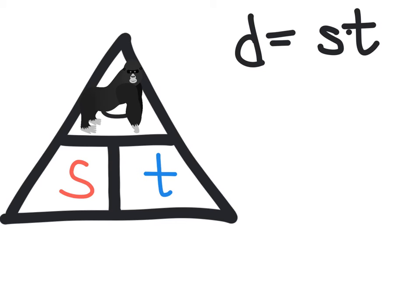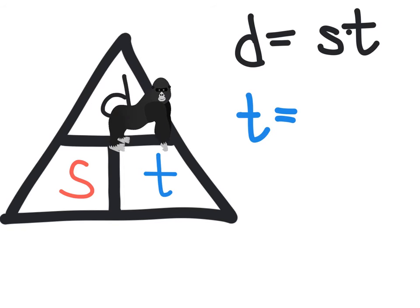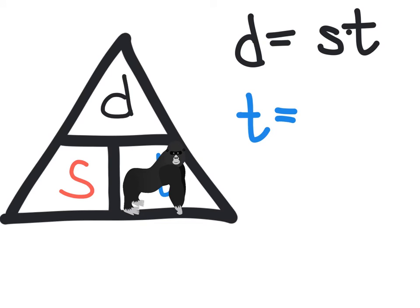The next variable I'm going to solve for is time. Again, place your hand over the variable you're looking for, or I'm going to place the gorilla over time, and rewrite that exactly as I see it. So distance is above speed. This means the formula for time equals distance divided by speed. And the third variable I'm going to solve for in this triangle is speed.